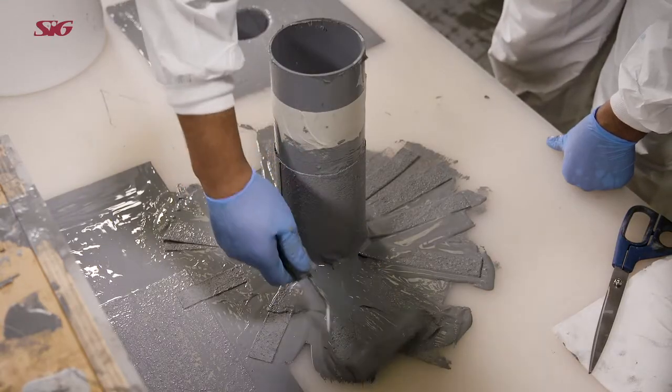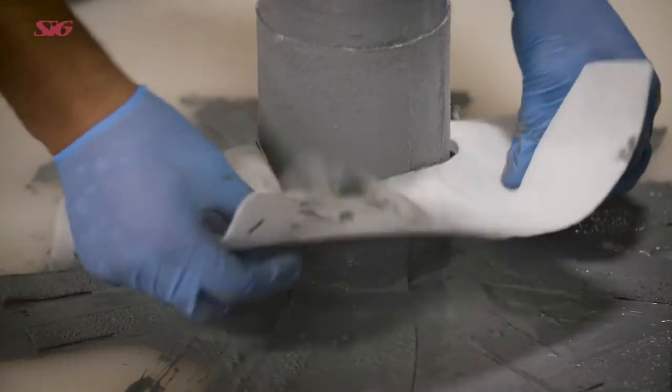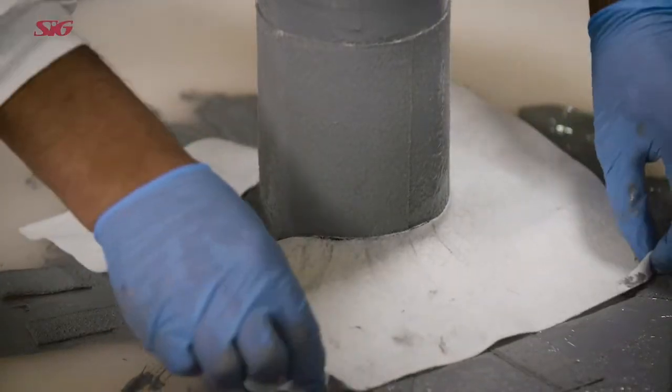Apply a base coat to the area around the pipe and place the second piece of fabric over the pipe and onto the area around it.